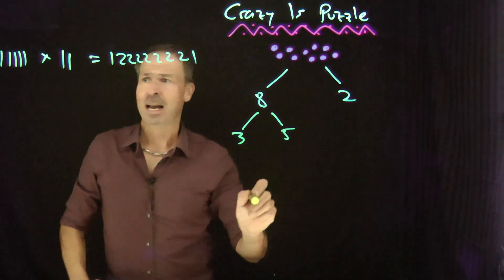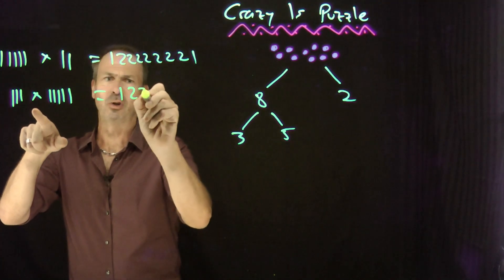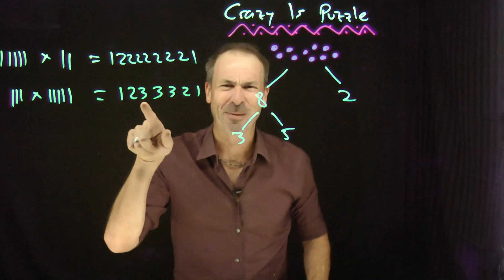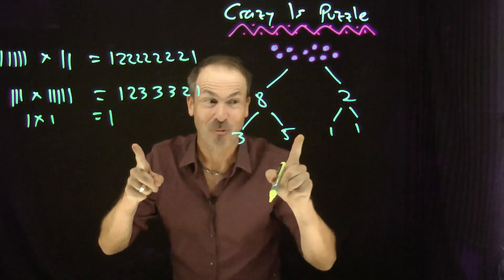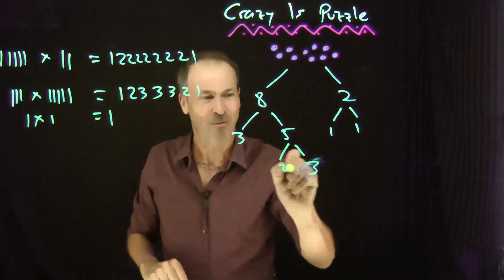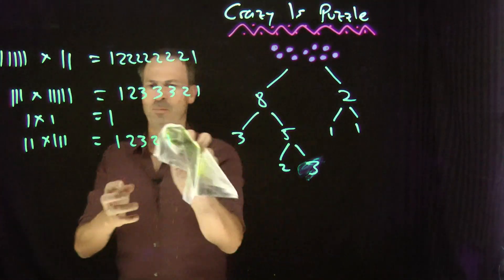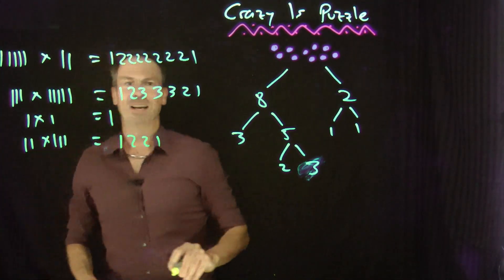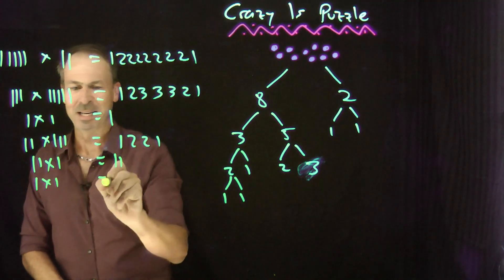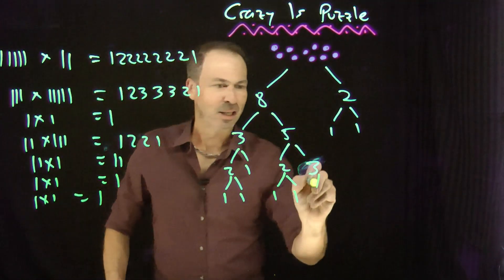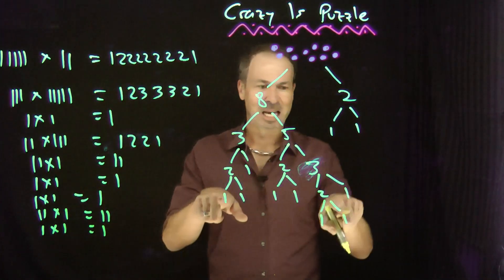Okay, 8 splits into 3 and 5. So 111 times 11111 — I believe that's a 7-digit number going up to the 3s: 1,233,321. The 2 goes to a 1 and a 1: 1 times 1 equals 1. Maybe the 5 goes to a 2 and a 3: 11 times 111, which I believe is 1221. A 3 can go to a 2 and a 1: 11 times 1 is 11. The 2 goes to a 1 and a 1: 1. The 2 goes to a 1 and a 1: 1. The 3 goes to a 2 and a 1: 11 times 1 is 11. And the final 2 goes to 1 times 1: 1. I think it's 10 piles now and we're done.